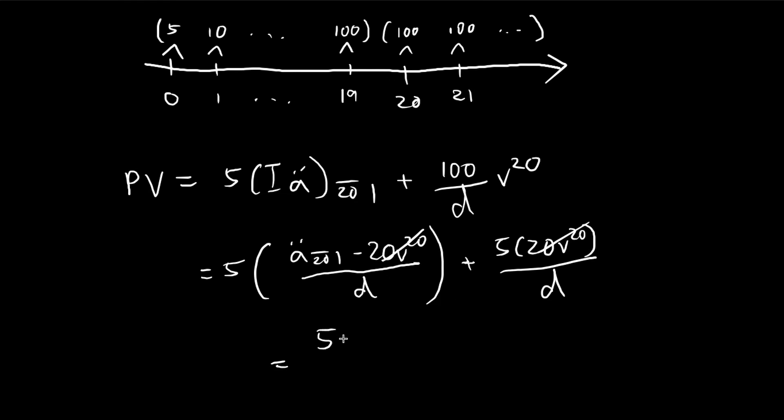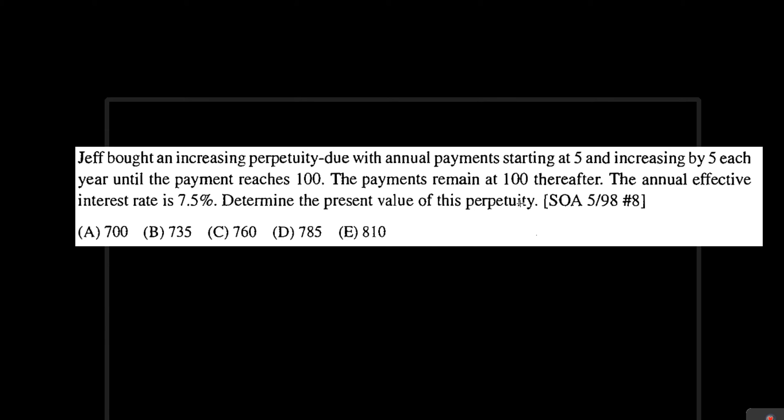So in the end, we're left with this expression, which is a lot simpler. So using this rather simpler expression, you can calculate the answer. And then once you plug all the numbers into your calculator for a present value of 7.5, you'll find that the answer is 785.